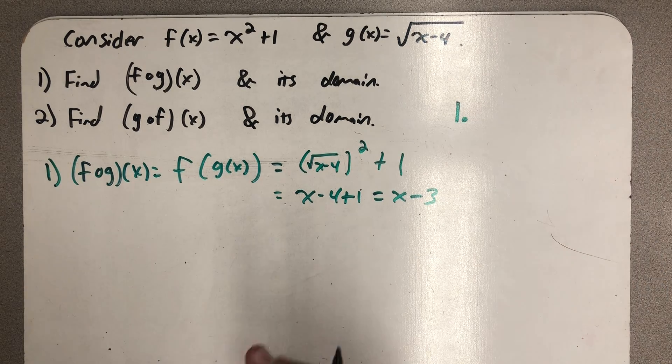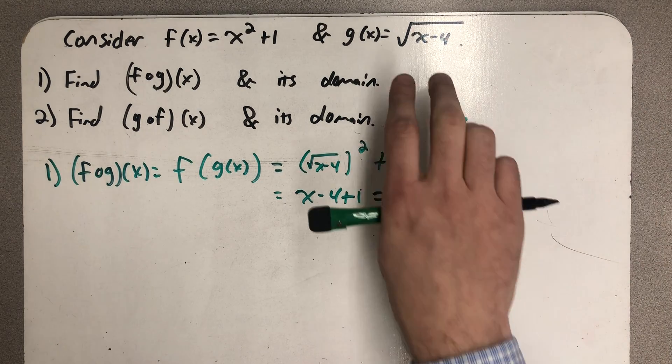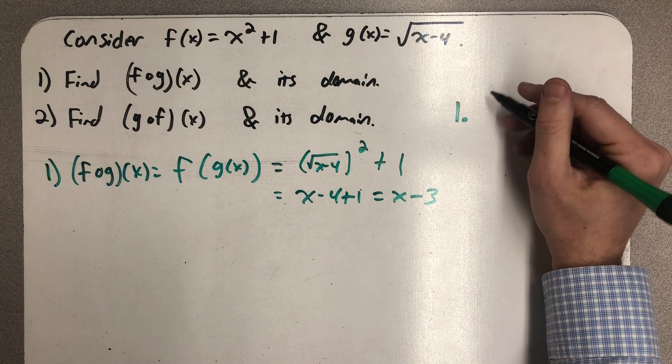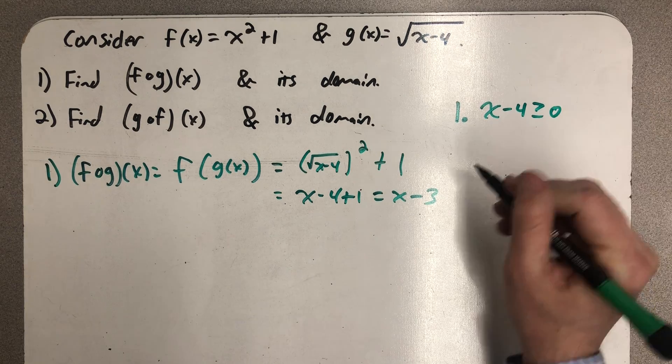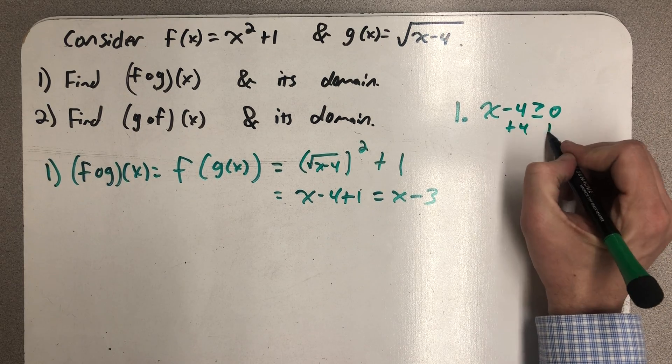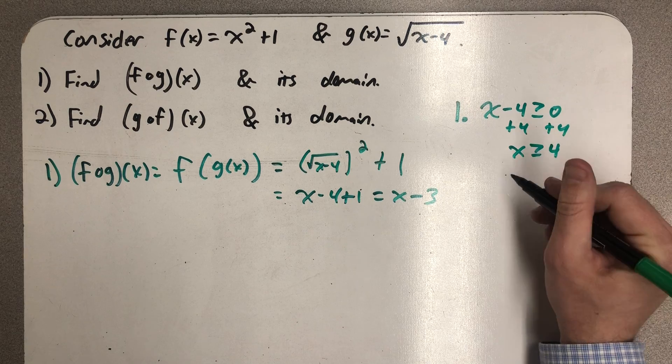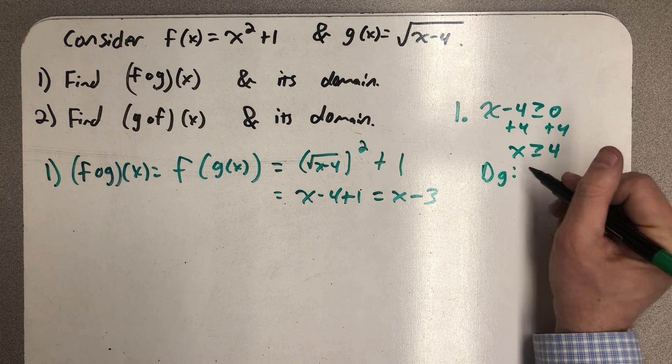We always start by trying to find the domain of the inside function, and here that's g of x. Since g is the inside function and a square root function, I know x minus 4 has to be greater than or equal to 0. So x has to be greater than or equal to 4. That is the domain of g.